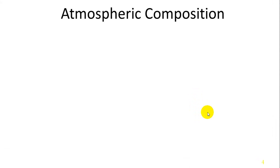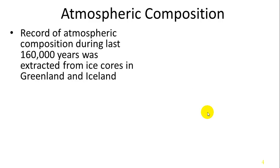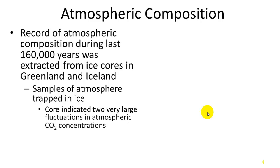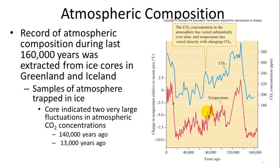There is a lot of evidence to support this. We've looked at the atmospheric composition of different gases over the past 160,000 years by looking at ice core temperatures. As ice freezes, it traps little particles of air, and we can look at the composition of that air to determine the historic composition. The ice core indicates two very large fluctuations occurred in carbon dioxide concentrations, 140,000 and 13,000 years ago, and the temperature and carbon dioxide appear to be very highly correlated with each other.